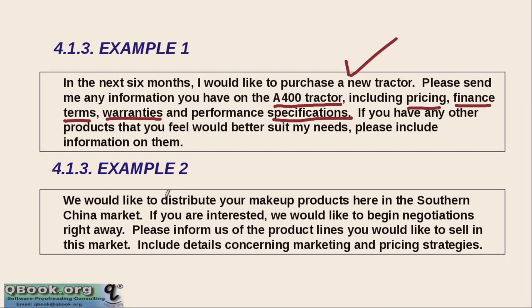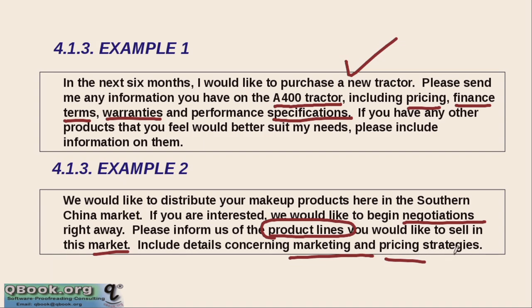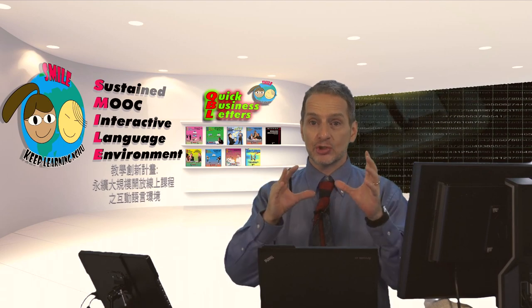Here's a business-to-business example. In this case, they're interested in beginning some negotiations — a buyer-seller relationship. They say 'We want to learn more about your product lines and if you would like to sell in this market, and we'd like more information about your marketing and pricing strategies.' That's very good and very clear. The question section can be short, clear, and easy to understand — that's the key point.